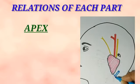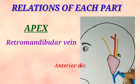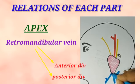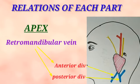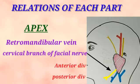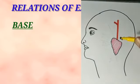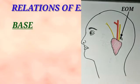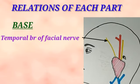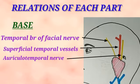The apex of the parotid gland is related to the anterior and posterior divisions of the retromandibular vein, where the anterior division along with the facial vein forms the common facial vein, and the posterior division with the posterior auricular vein forms the external jugular vein. The apex is also related to the cervical branch of the facial nerve, which is its last terminal branch. The base of the parotid gland is directed above and is related to the external acoustic meatus, the temporal branch of the facial nerve, the superficial temporal vessels, and the auriculotemporal nerve.